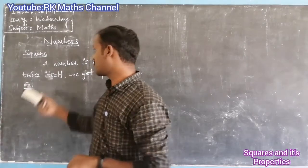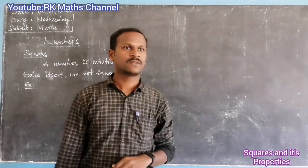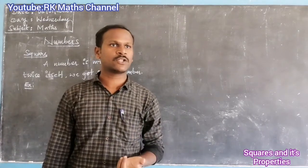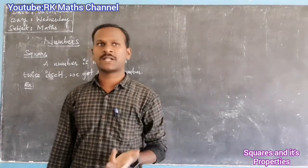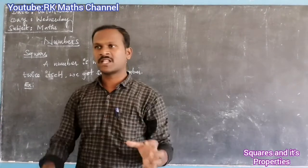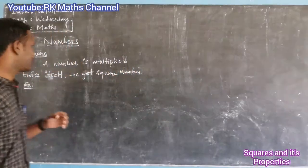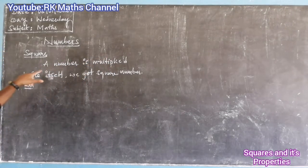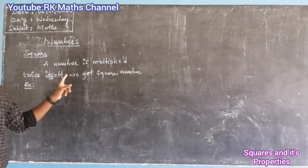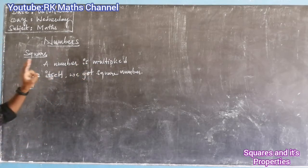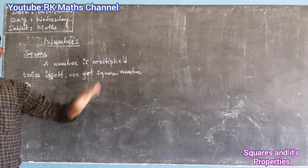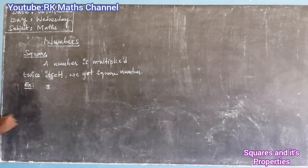Now the first topic is squares. When you multiply a number two times, you will get a square number. For example, three squared means three times three, and you get a square number.